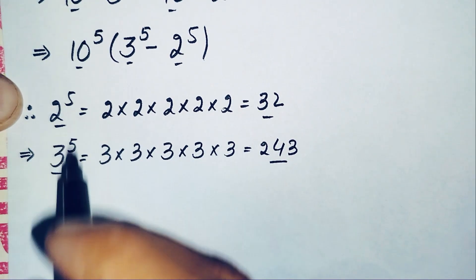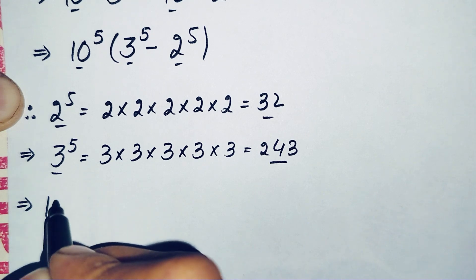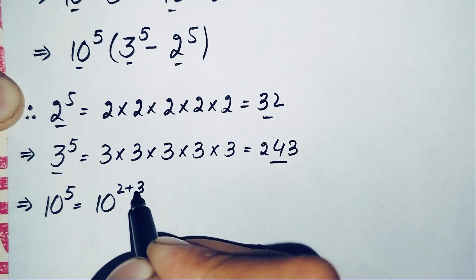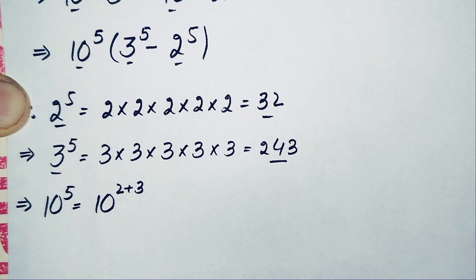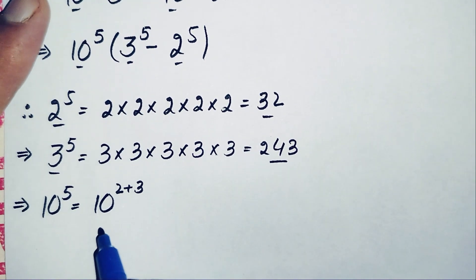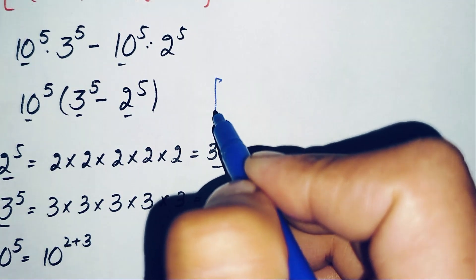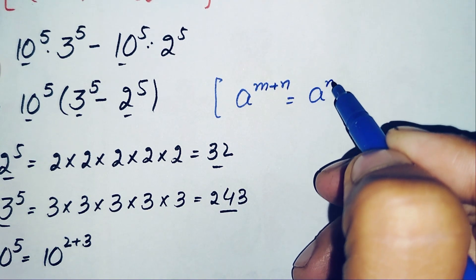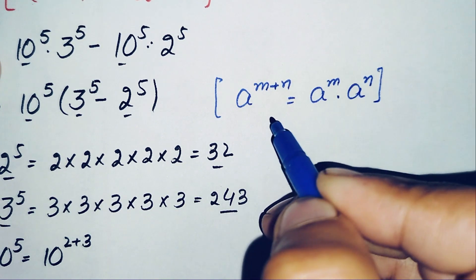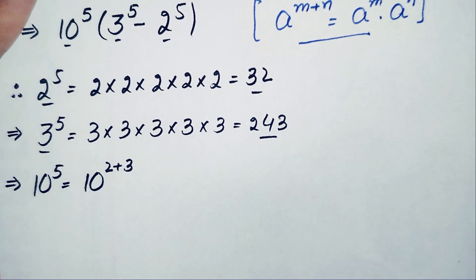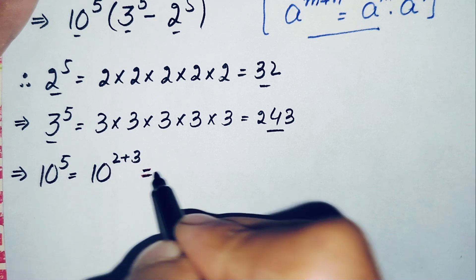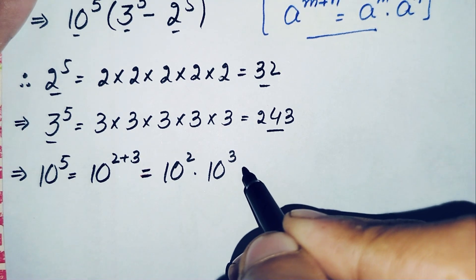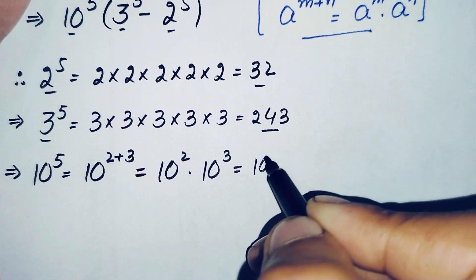Now we find the value of 10 raised to power 5. We can write the exponent 5 as 2 plus 3, and use the property that s raised to power m plus n equals s raised to power m times s raised to power n. So 10 raised to power 5 equals 10 raised to power 2 times 10 raised to power 3. The value of 10 raised to power 2 is 100, and 10 raised to power 3 is 1000.